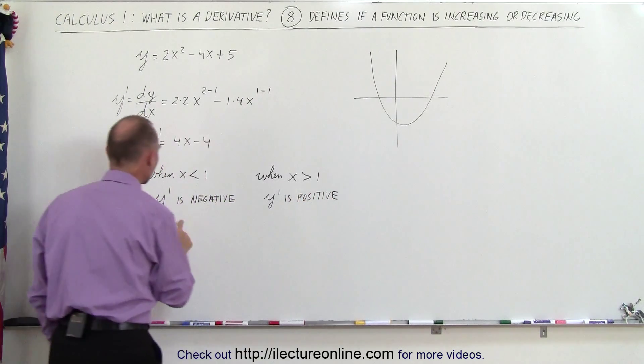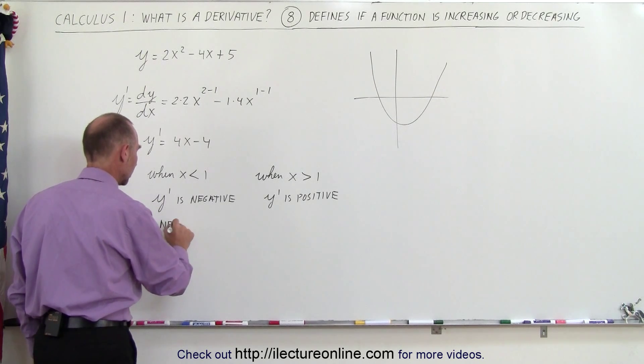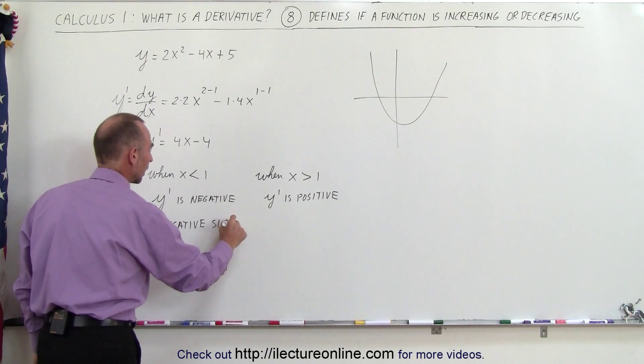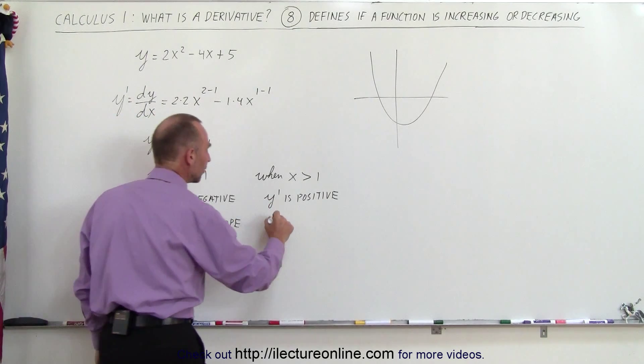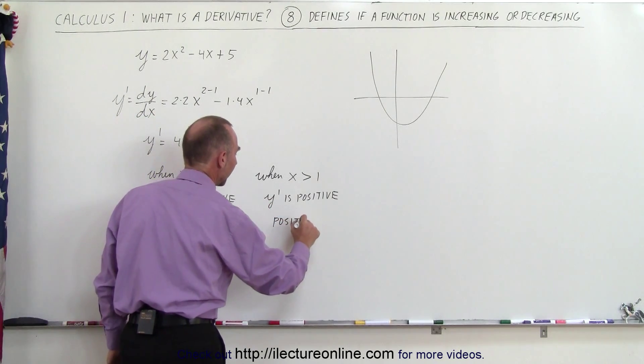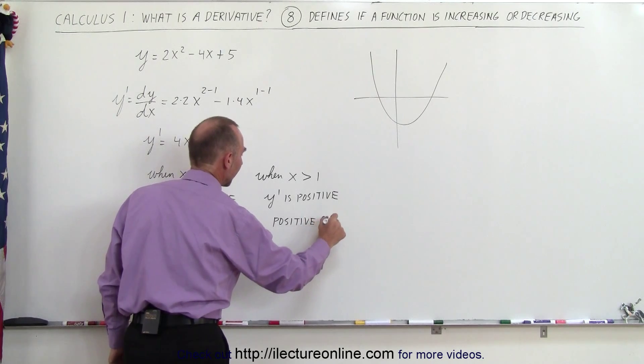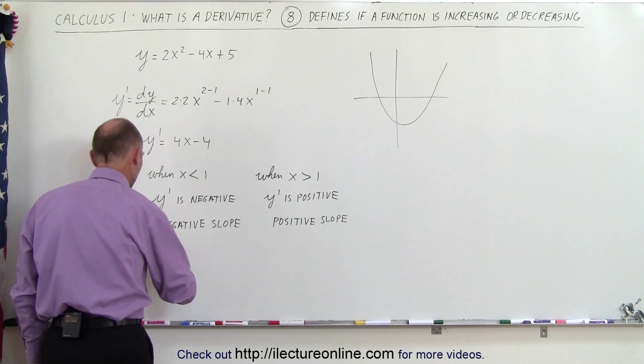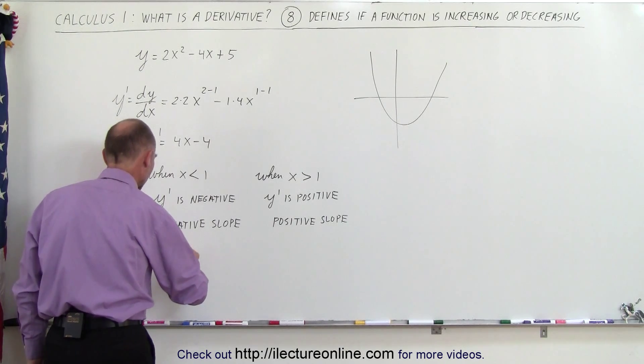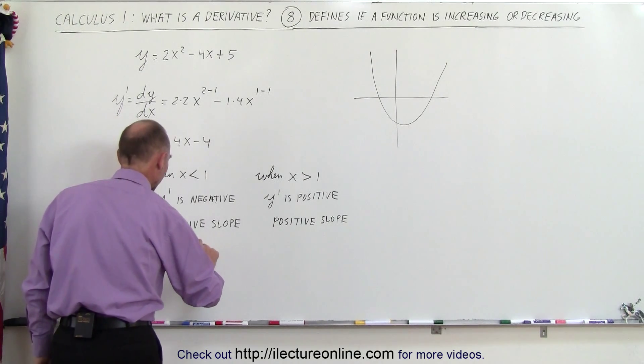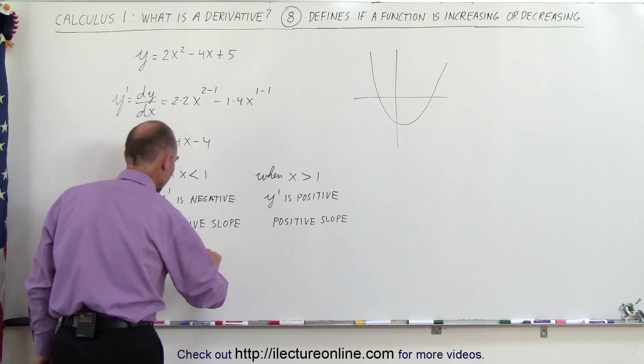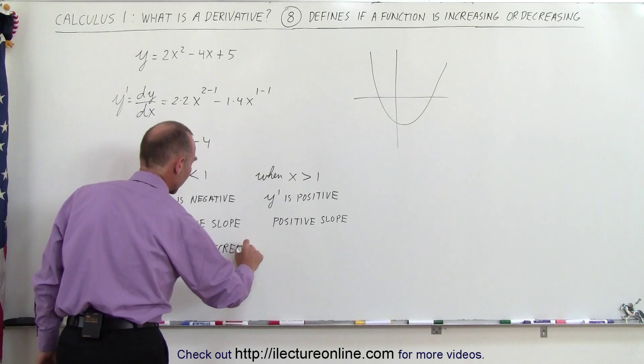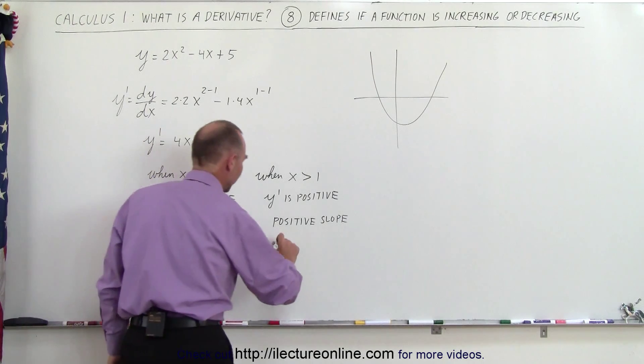Which means that here we have a negative slope, here we have a positive slope. And this means that the function is decreasing, and this means that the function is increasing.